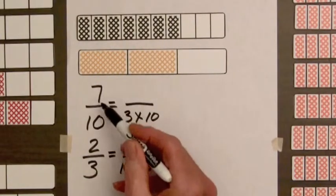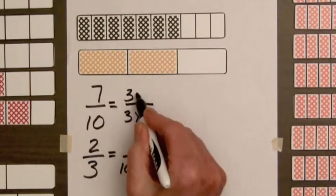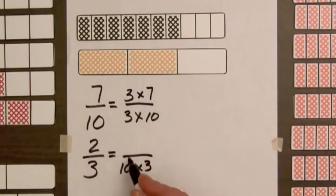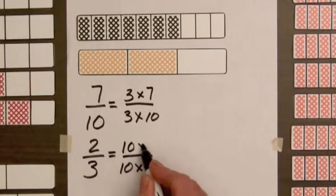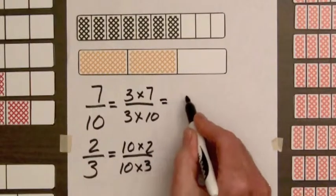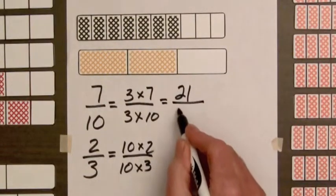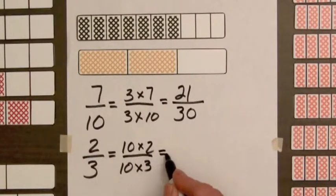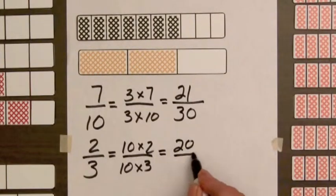And we need to multiply the numerator and denominator by the same number, so this is going to be 3 times 7 and down here 10 times 2. This is going to equal 21 over 30, this is going to equal 20 over 30.